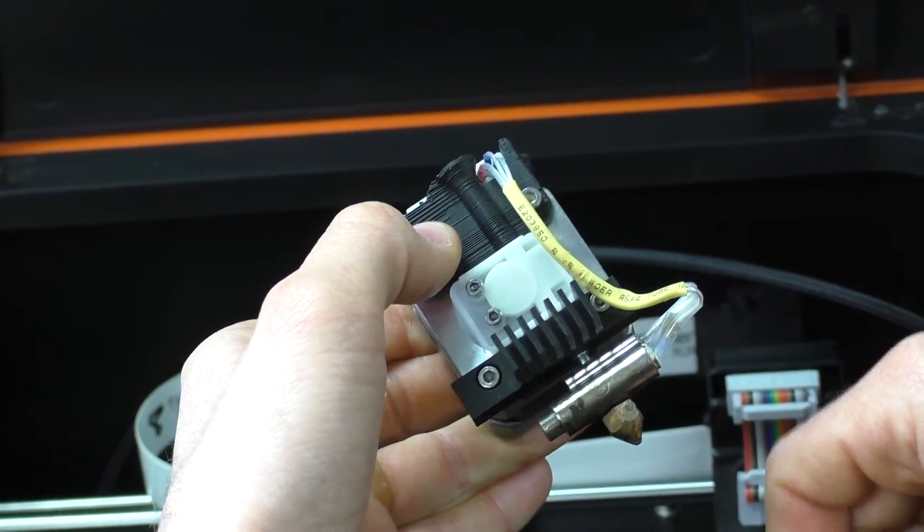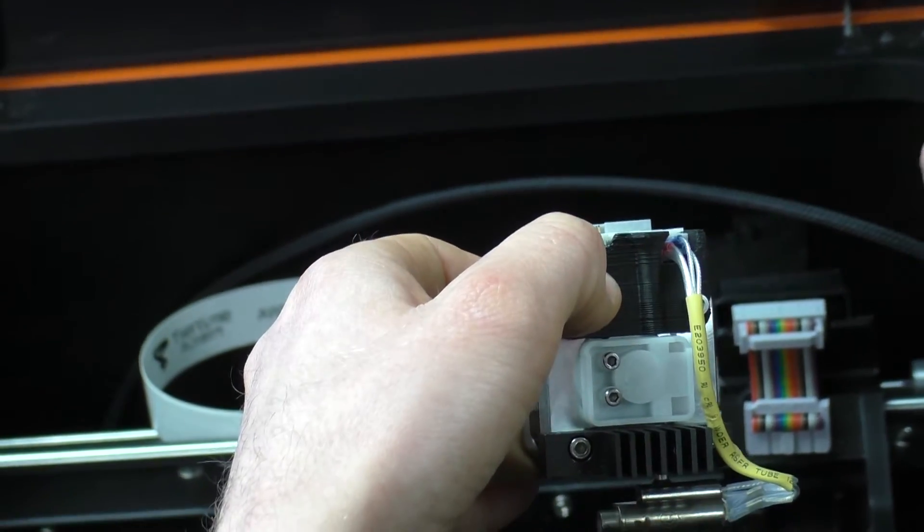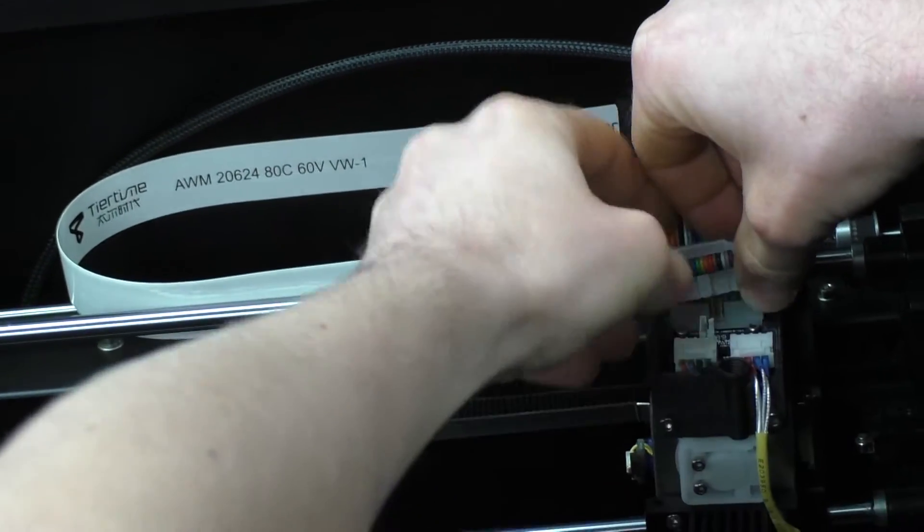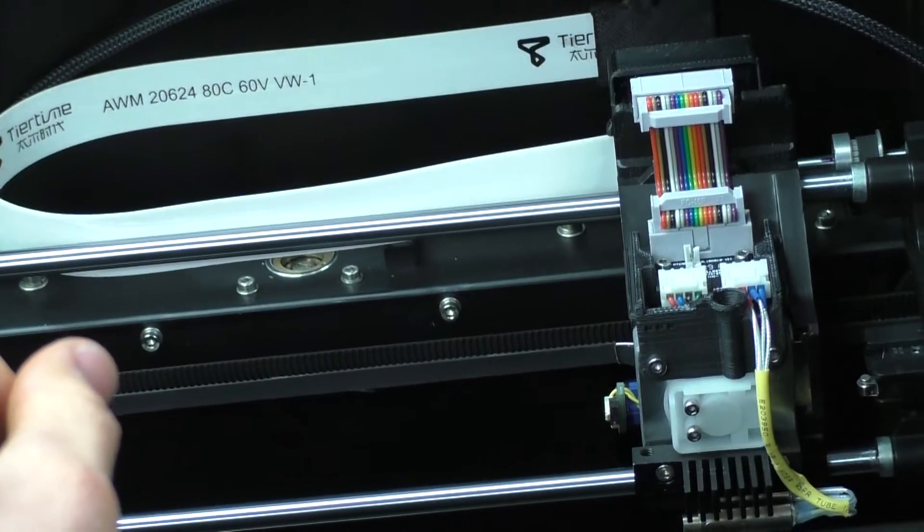Now that we've exposed our nozzle, we'll plug it back into the printer to heat it up. So just pop it straight back in exactly how it is, put the rainbow cable into the top of the print head and turn your printer on.